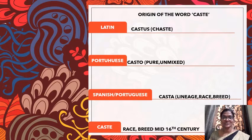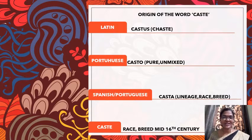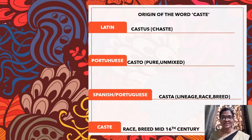Before discussing the theories about the origin of caste system, we must understand the origin of the word caste. The word 'caste' came from the Latin word 'castus', and also from the Portuguese word 'casto' which means pure or unmixed, sometimes used to mean separated. The word arrived in English through the Portuguese 'casta', meaning race or lineage, and was first used from the 16th century in reference to Hinduism's system of social stratification to mention the division of people in India.